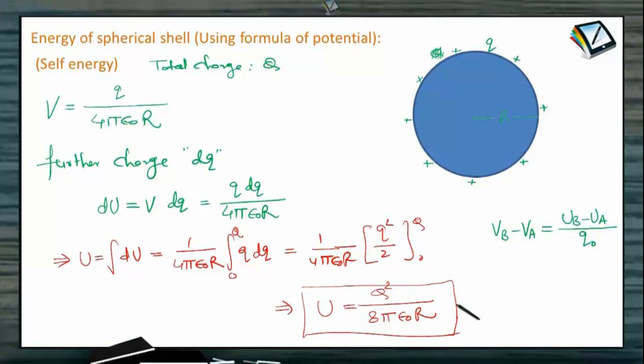And don't forget electric field energy is existing in space wherever the electric field is existing. Half epsilon naught E square is the energy stored per unit volume in any kind of electric field.